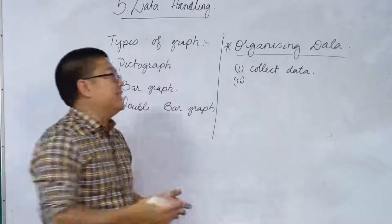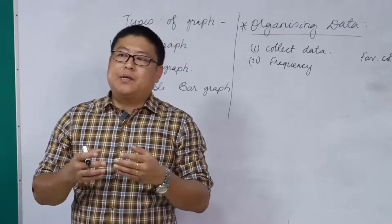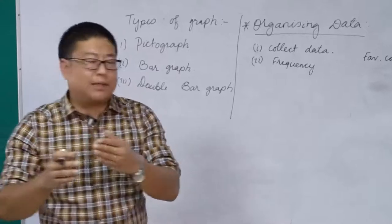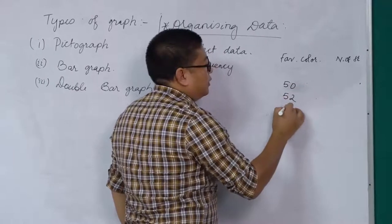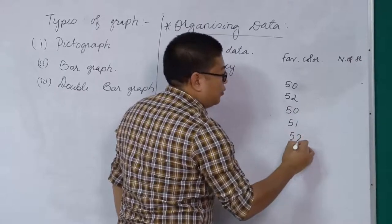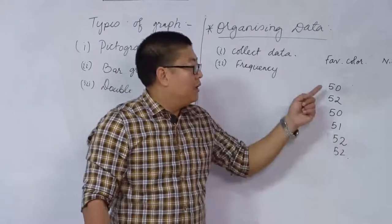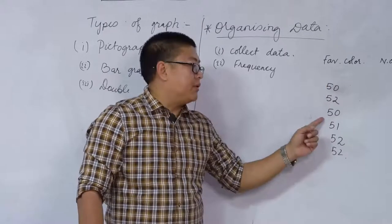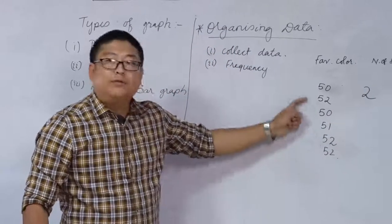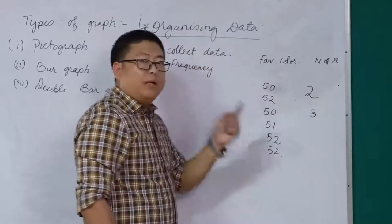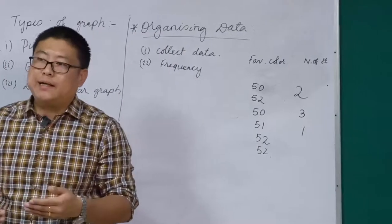The next step is to find the frequency. Frequency means the number of times a particular entry or data repeats itself. For example, if I have marks — 50, 52, 50, 51, 52, 52 — the frequency of 50 is 2 because it appears two times. 52 repeats three times, and 51 repeats just once. So frequency simply means the repetition of the same data or same entry.